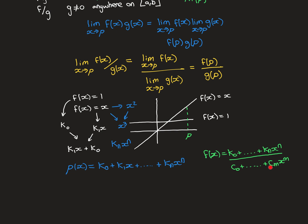We can also consider rational functions — one polynomial in the numerator divided by another polynomial in the denominator — and conclude they're continuous using the quotient rule, provided the domain contains no roots of the denominator. If the domain is the entire real line, you need a denominator polynomial with no real roots, which requires an even-degree polynomial chosen carefully. Alternatively, you can restrict the domain to an interval where the denominator is never zero, and then conclude the rational function is continuous over that interval.